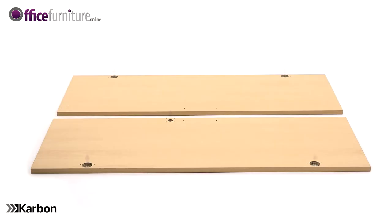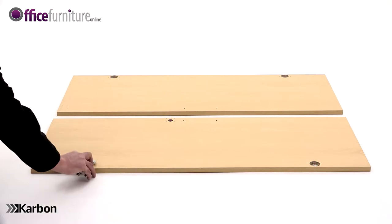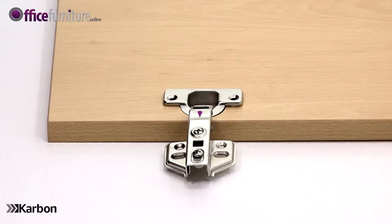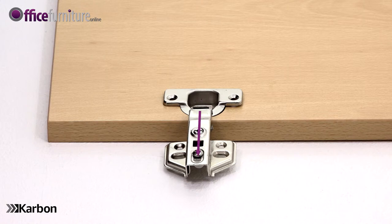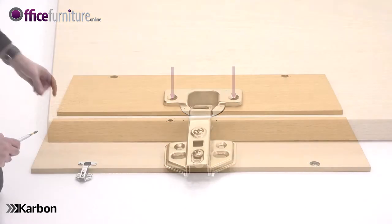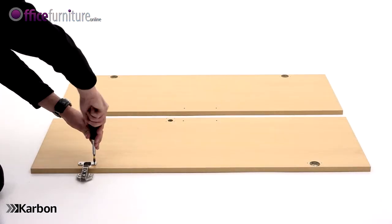Next, lay the two door panels on the floor with the holes facing upwards. Place the hinge housing into the holes in the door, making sure each hinge mechanism extends over the edge of the doors. With the pilot holes aligned with the holes in the hinges, secure each with two 15mm screws.